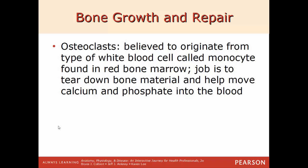Osteoclasts are believed to be originated from monocytes, a type of white blood cell. Their job is to tear down bone mineral and move material such as calcium and phosphate into the blood. Bone is a very living, dynamic tissue — constantly being built up and broken down. The osteoblasts help build up the bone and osteoclasts help tear it down, because sometimes your body needs more calcium, phosphorus, or other minerals stored within bone.